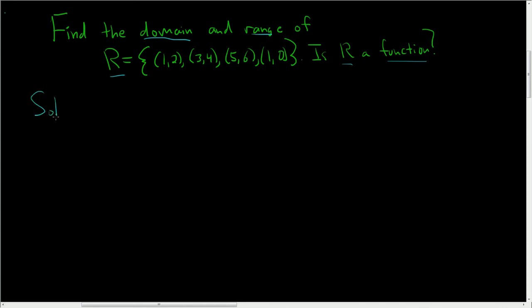So solution. The domain is the set of first components in a relation. So it's the set. And we're just looking at the first components: 1, 3, 5, 1. Oh wait, we already said 1. So you only have to write the 1 once. So that's the domain.